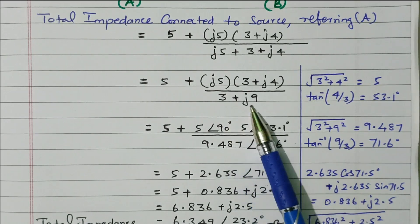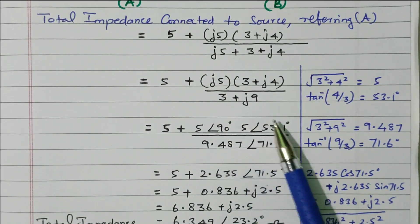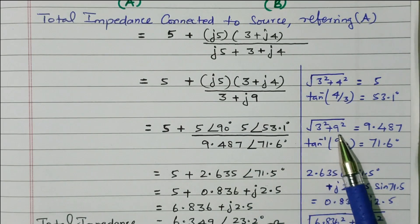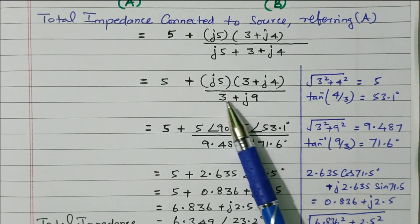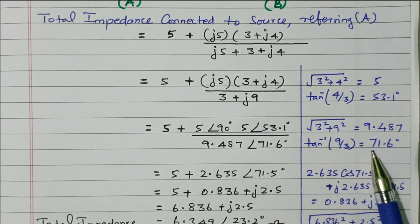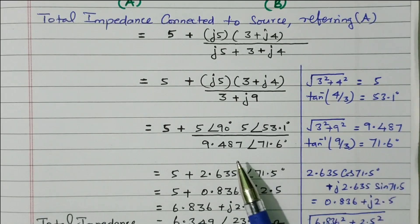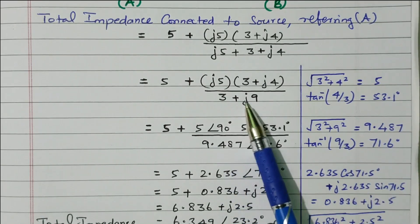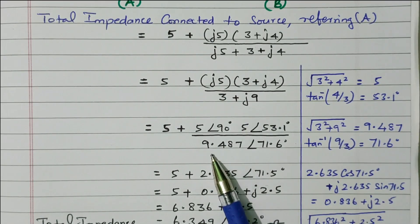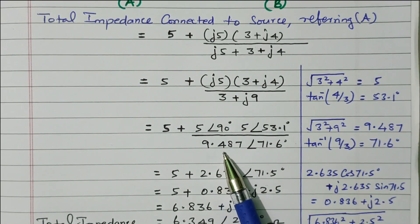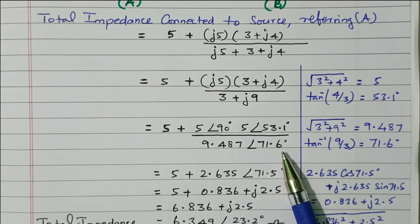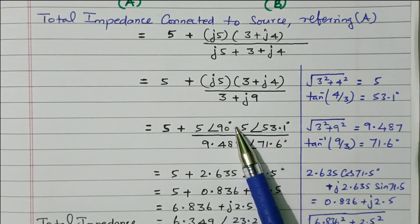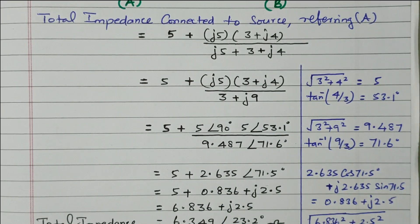Similarly, we can find 3 plus J9 in polar form. Square root of 3 squared plus 9 squared equals 9.487. The angle is tan inverse of 9 by 3, which is 71.6 degrees. So this rectangular form is now converted into polar form: 9.487 with an angle of 71.6 degrees. Now we can go for simplification.